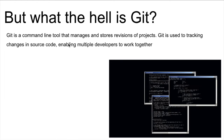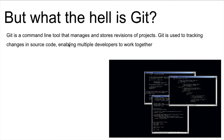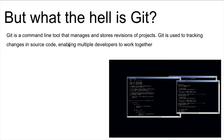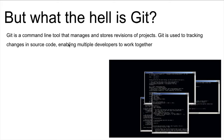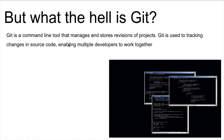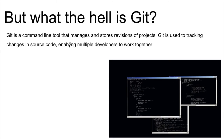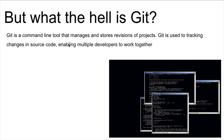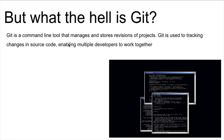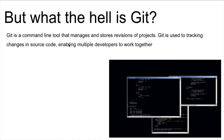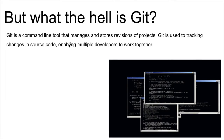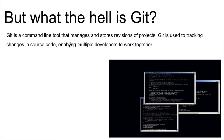If I wanted to explain Git, I'd say that Git is a command line tool. A command line tool is something that you're doing in your terminal and your terminal only. It's not a browser thing, it's not a Facebook thing — it's only something that you are doing inside your terminal. It allows you to manage and store different revisions of your project. A lot of people use Git to track changes in their source code, and you'll be able to work with multiple developers, all inside your terminal.